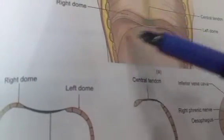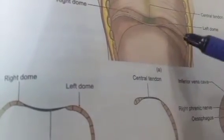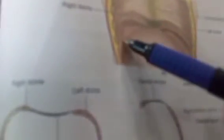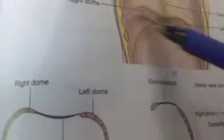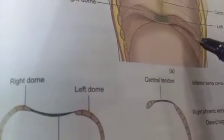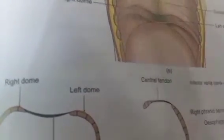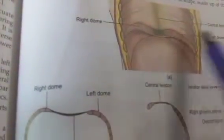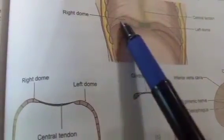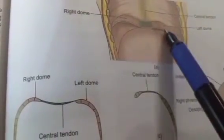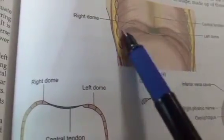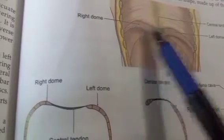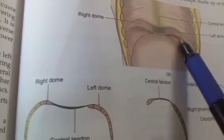From the circumferential origin described, the fibers of the diaphragm arch upwards and inwards, forming the right and left domes of the diaphragm. The right dome is higher compared to the left dome.